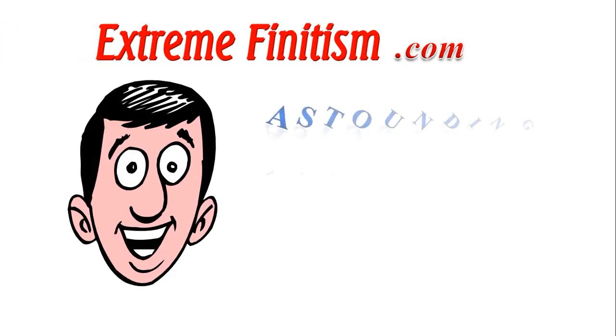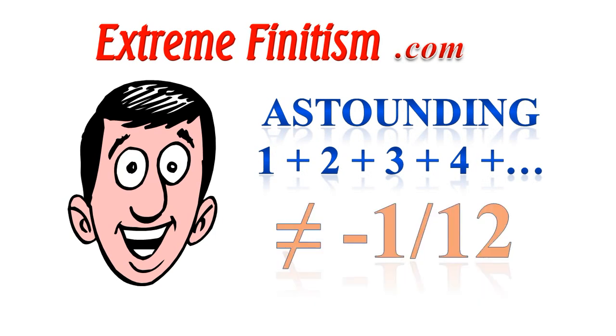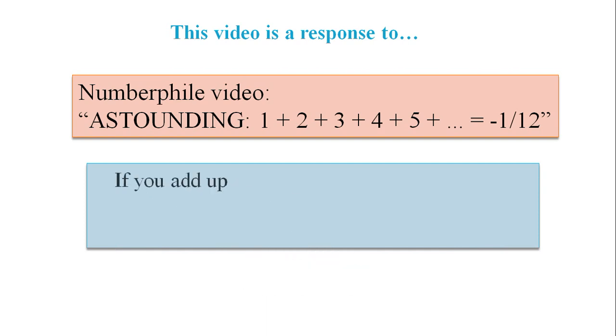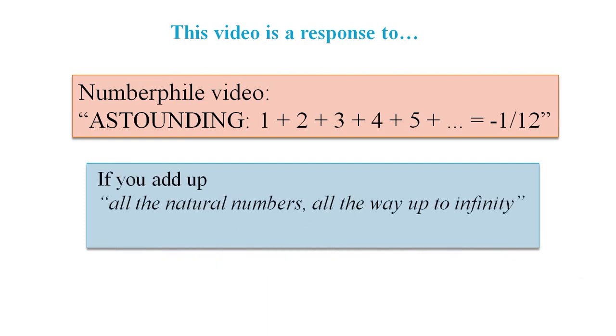Extreme Finitism presents: Astounding 1+2+3+4 and so on does not equal -1/12. This is a response video to the Numberphile video called Astounding 1+2+3+4 and so on equals -1/12, in which it claims if you add up all the natural numbers all the way up to infinity, the answer is -1/12. In this video we will reveal the truth about -1/12.